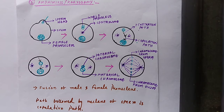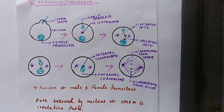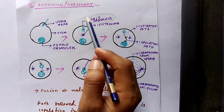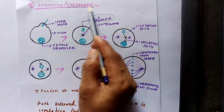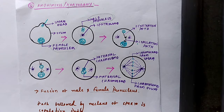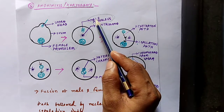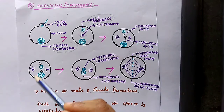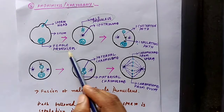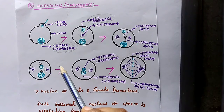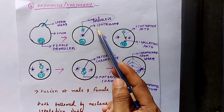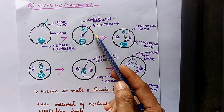In the previous video we covered the different steps of fertilization like the acrosomal reaction and cortical reaction. In this video we will discuss the last step of fertilization, that is amphimixis or karyogamy. Karyon means nucleus and gamy means fusion. In this process, the fusion of male pronucleus and female pronucleus takes place — the nucleus of sperm is the male pronucleus and the nucleus of ovum is the female pronucleus.